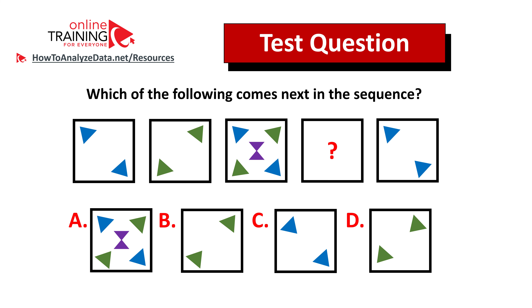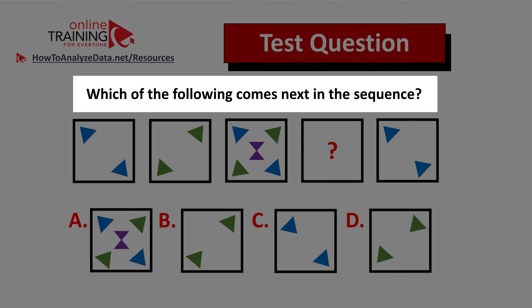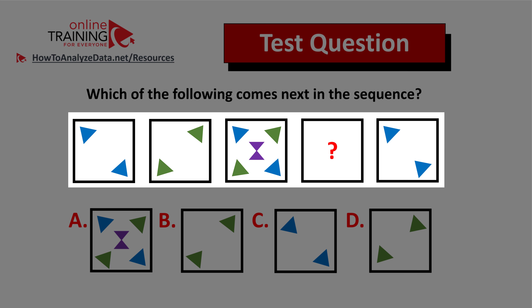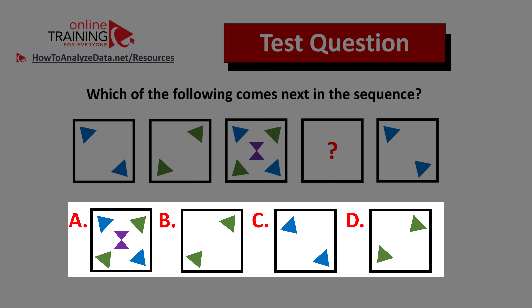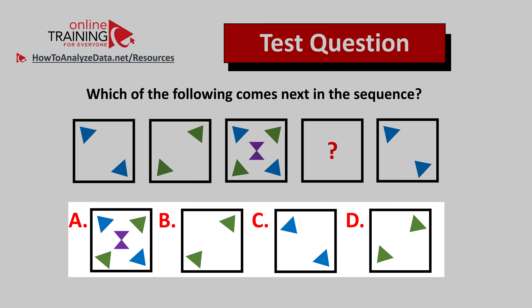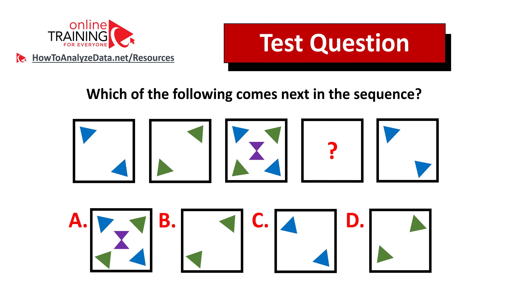Here is a question from the test you can try to solve on your own. Which of the following comes next in the sequence? You're presented with a sequence of five squares and square number four is missing. You have four different choices: A, B, C, and D. One tip: always look for patterns. If you figured out the answer, feel free to post it in the comment section with your rationale. I will also post the detailed answer in my future videos, so make sure to subscribe. Thanks for participating and good luck!